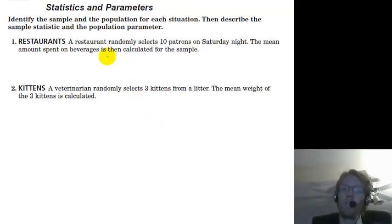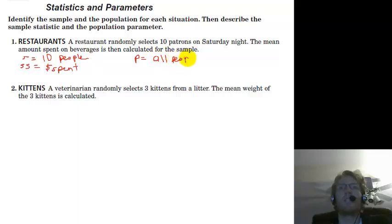Identify the sample and population for each situation, then describe the sample statistic, SS, and the population parameter, PP. A restaurant randomly selects 10 patrons on a Saturday night. The mean amount spent on beverages is calculated for the sample. So our sample is the 10 people that were selected. Our sample statistic equals the money spent by those 10 people. Then our population is going to be all the people that are in this restaurant.